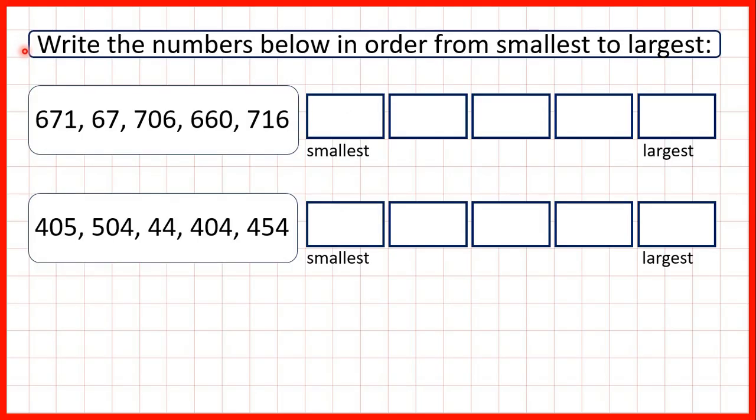We need to write the numbers below in order from smallest to largest. So in our first set of numbers, we have 671, 67, 706, 660, and 716.